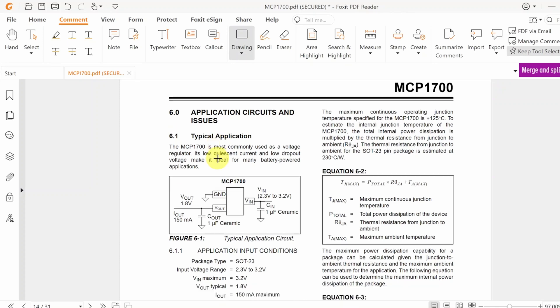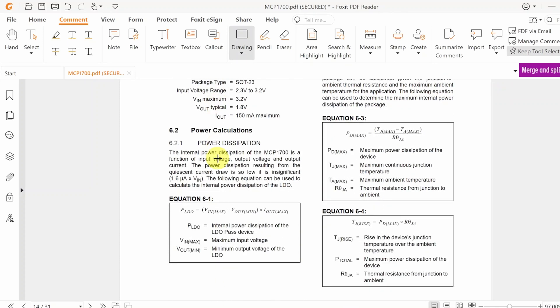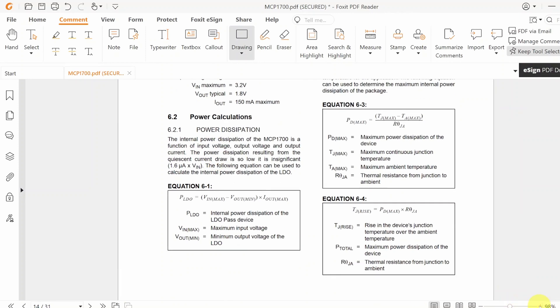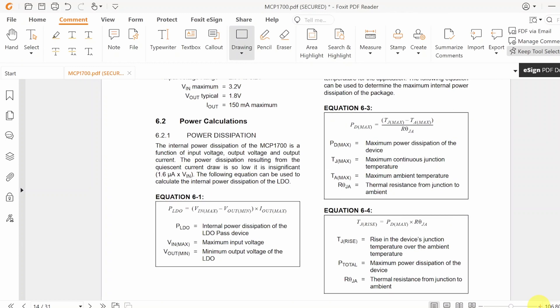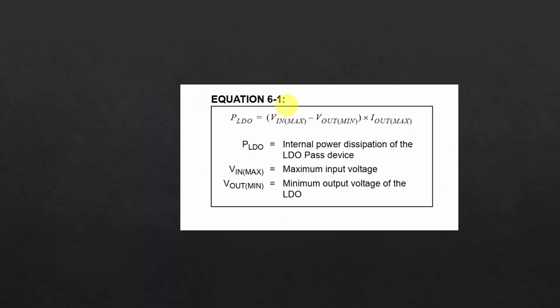For a particular application setup internal power dissipation of the regulator can be found using equation 6.1. Since quiescent current is very small, losses associated with quiescent current can be ignored. So the power loss of the regulator is just the power loss in the CMOSFET. Here VIN is the input voltage you are feeding to the regulator, VOUT is 3.3V and IOUT is the current you are drawing from the regulator.